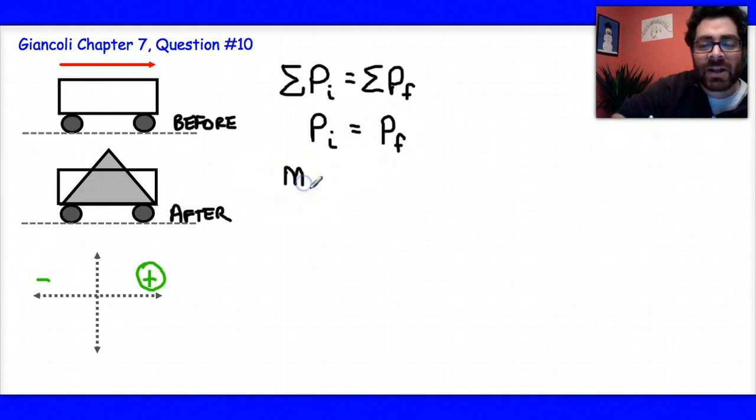So now I can say that M1 V1 must be equal to M1 times V1 prime. And a lot of things I know. I know the initial mass of the cart and I know its speed. Both of those are given to me in the problem.